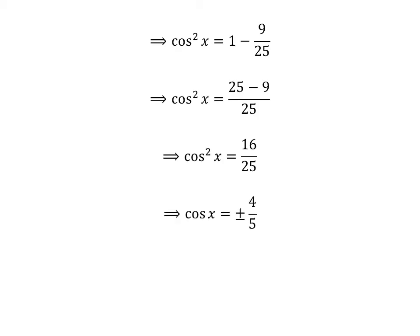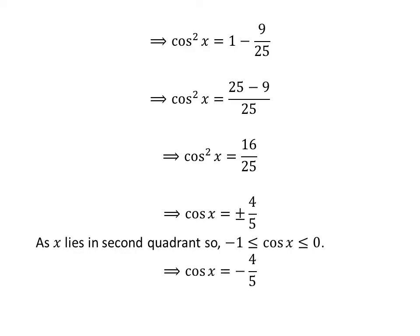Taking square root of both sides of the above equation gives us cosine of x is equal to plus or minus 4 upon 5. As x lies in the second quadrant and values of cosine function lie between minus 1 and 0 in the second quadrant, cosine of x is equal to minus 4 upon 5.